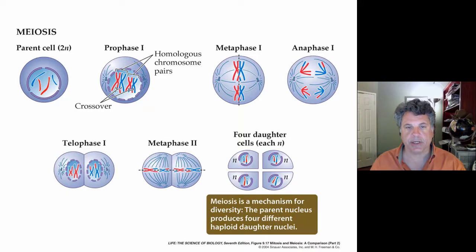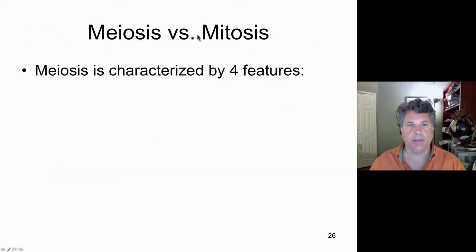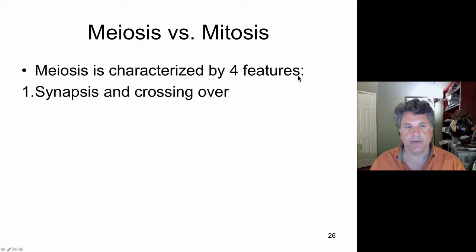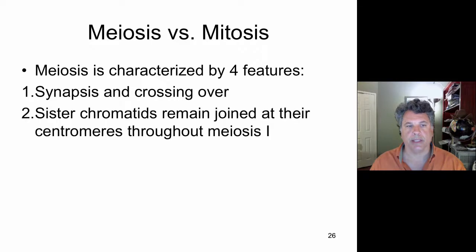But before we do that I want to draw a stark contrast between meiosis and mitosis. The features of meiosis that we need to focus on are that there is synapsis and crossing over. That is, homologous chromosomes pair in meiosis but do not in mitosis. And furthermore in meiosis there is crossing over, that is, exchange of genetic material between chromatids on homologous chromosomes.